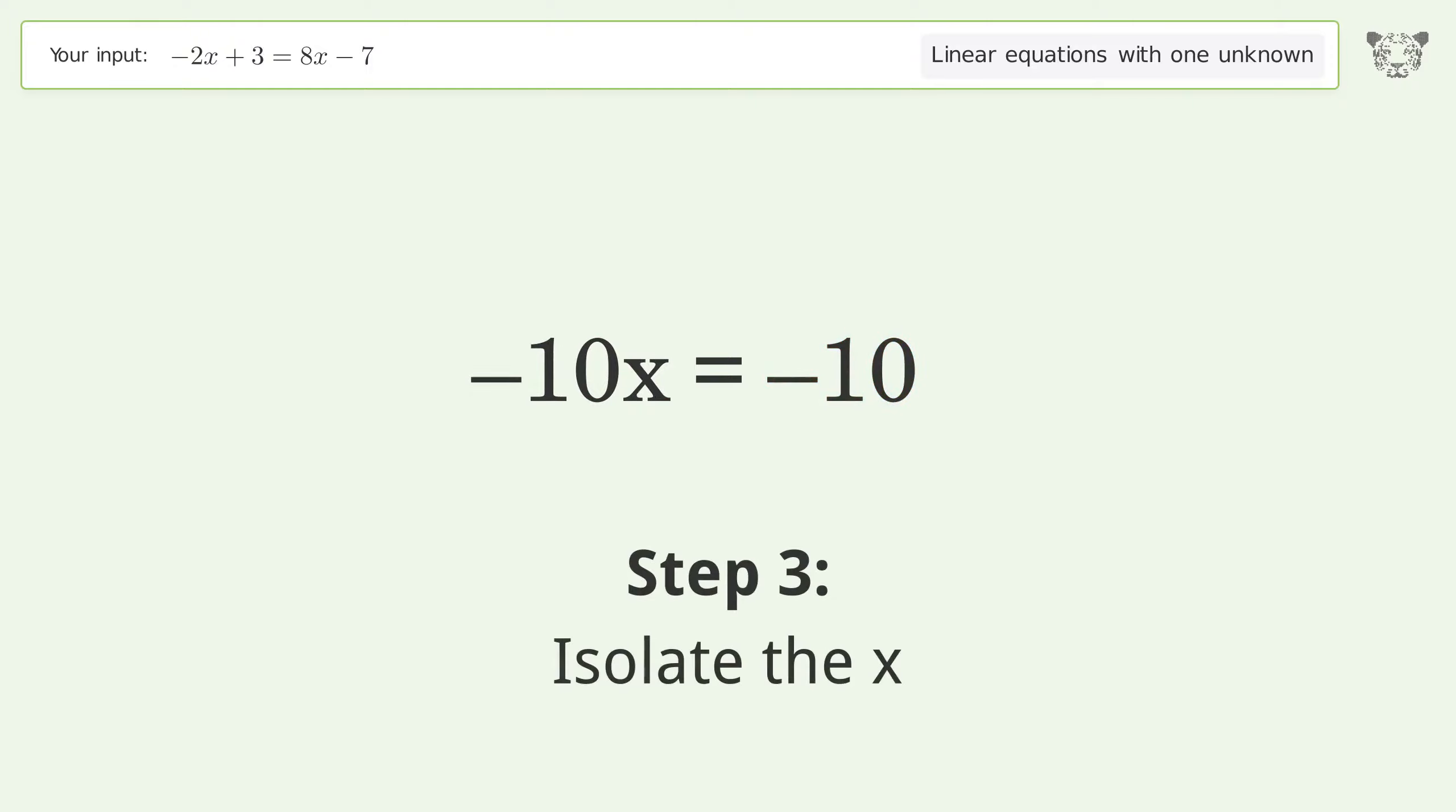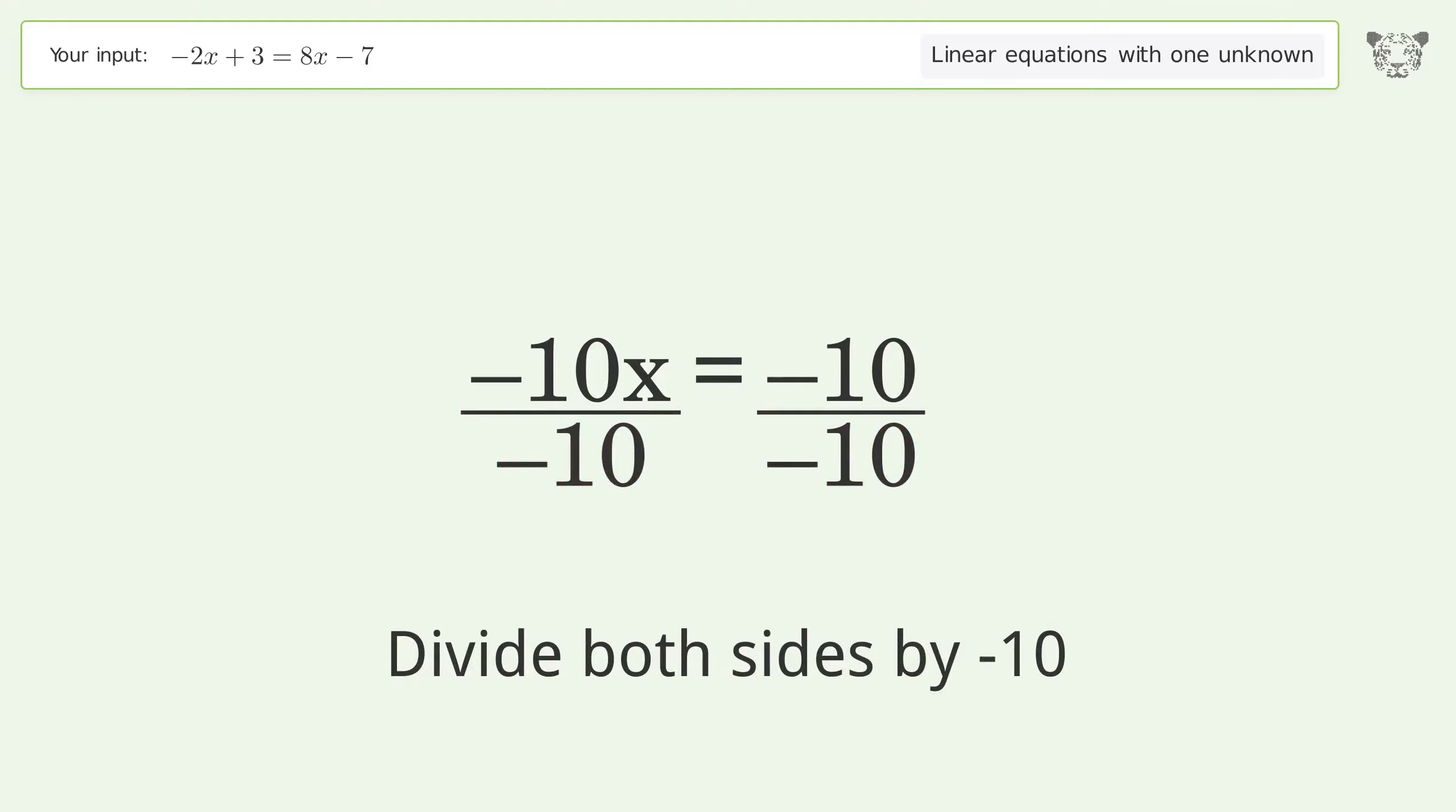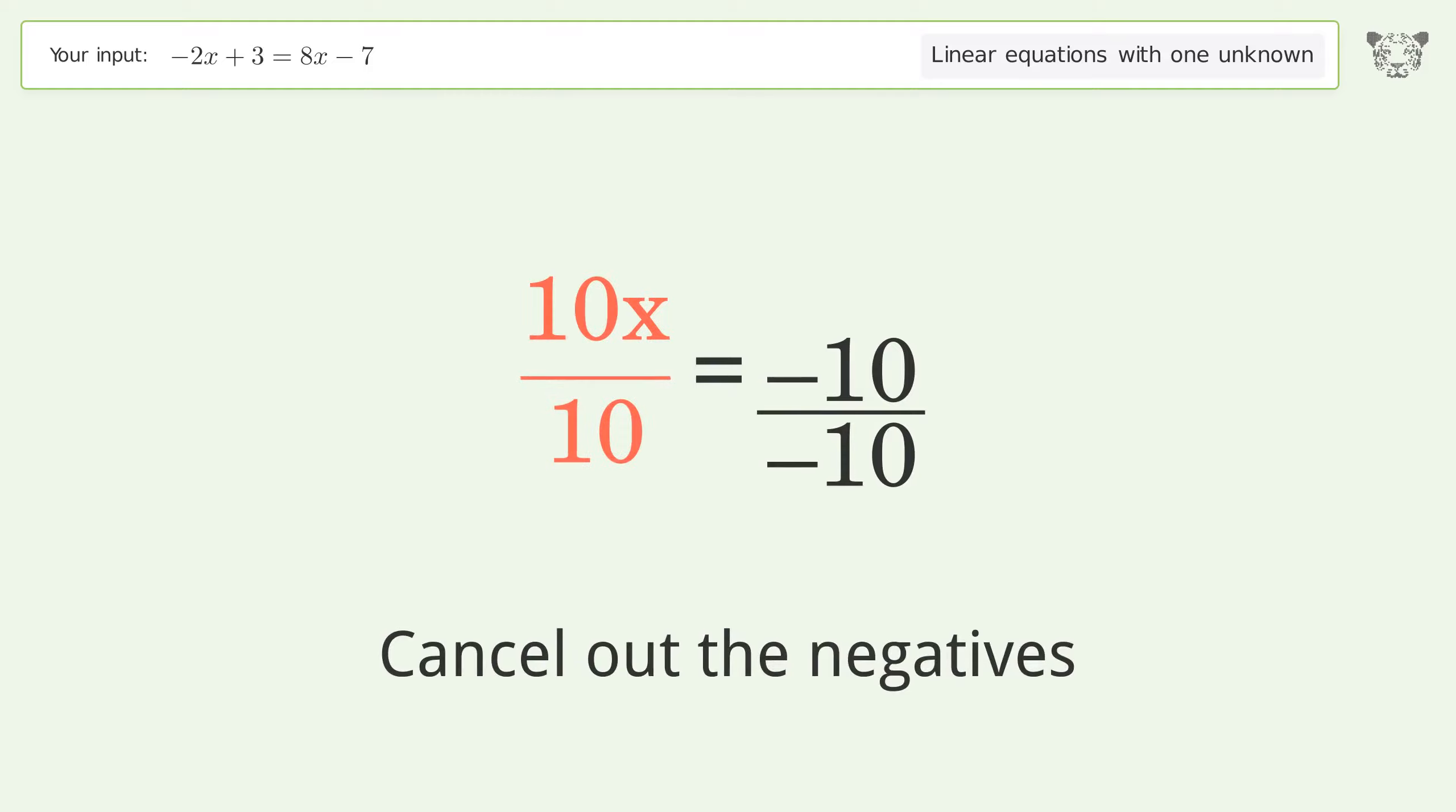Isolate the x. Divide both sides by negative 10. Cancel out the negatives. Simplify the fraction.